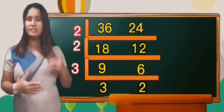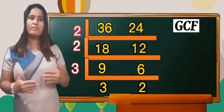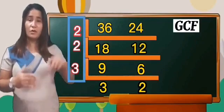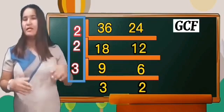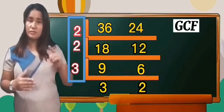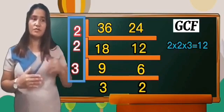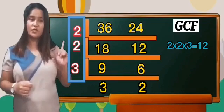So now we can find the GCF. You can simply draw a line like this going straight down here. And it's gonna be 2 times 2 times 3 equals 12. And our GCF now is 12.